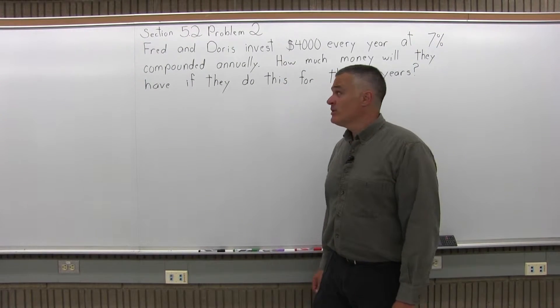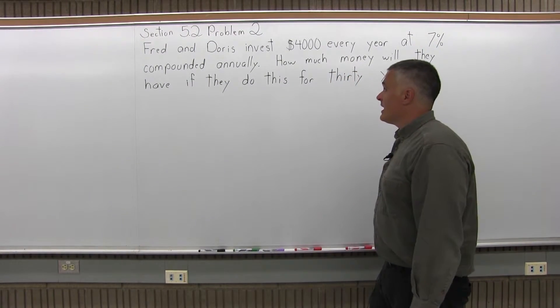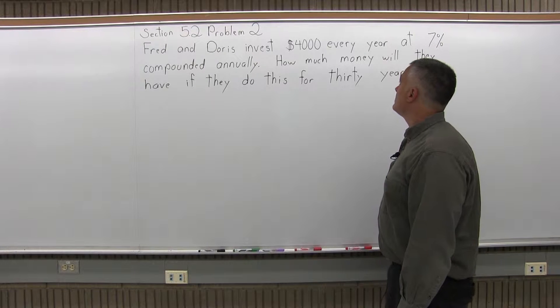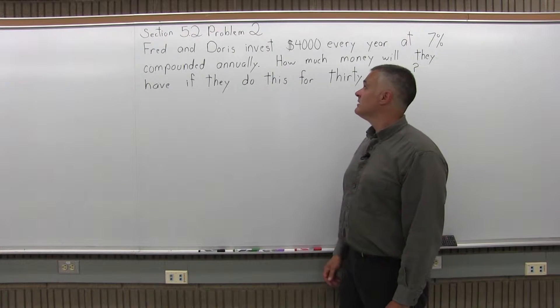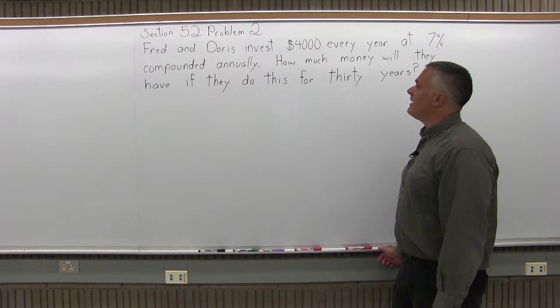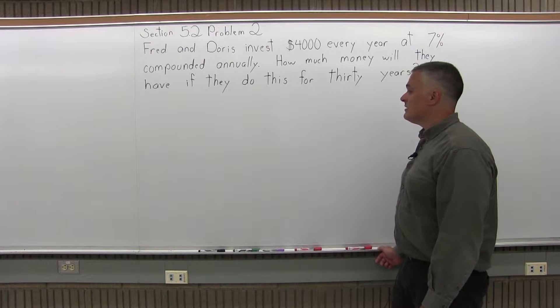This is Section 5.2, Problem 2. It says, Fred and Doris invest $4,000 every year at 7% compounded annually. How much money will they have if they do this for 30 years?